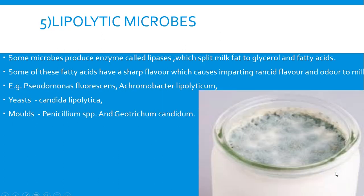Moving to the last type — lipolytic microbes. Lipolytic activity is mainly concerned with lipids, and we know that milk also contains fats. Some microbes produce an enzyme called lipase, which splits the milk fat into glycerol and fatty acids. Some of these fatty acids have a sharp flavor, causing rancid flavor. Lipolytic microorganisms in milk include bacteria such as Pseudomonas fluorescens, Achromobacter lipolytica, and among yeasts, Candida lipolytica, and molds like Penicillium species and Geotrichum candidum.